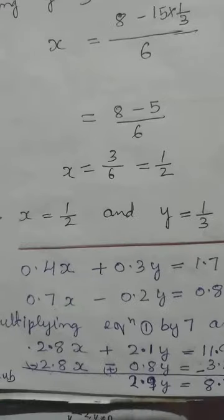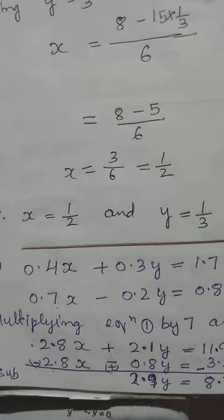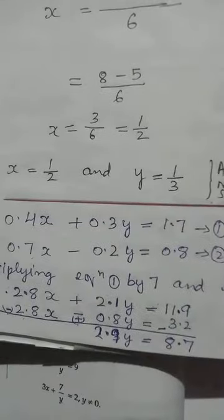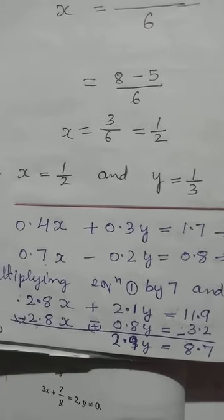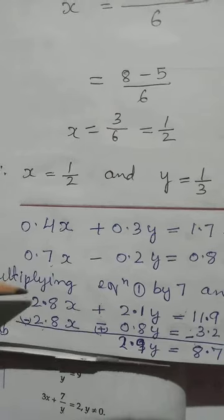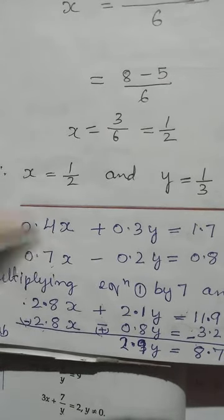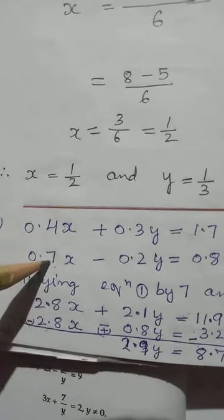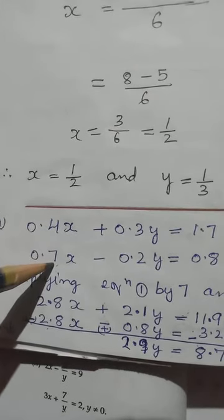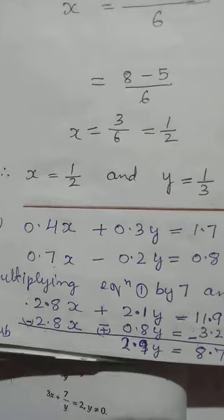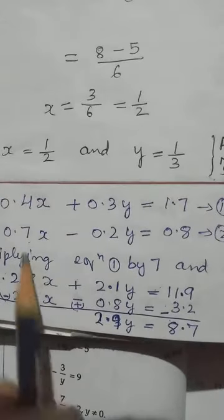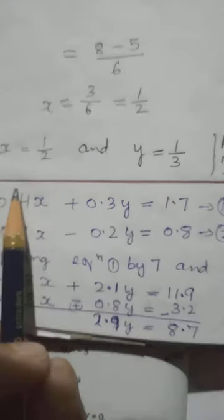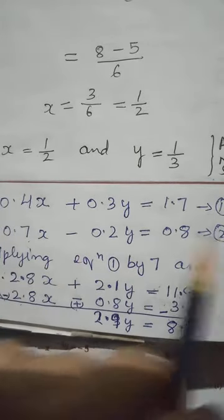We will try to make the coefficient of X or Y equal. Either you make the coefficient of X equal or the coefficient of Y equal. We have to multiply by such a number so that they will be equal. I want to make the coefficient of X equal here. We have decimals, so let us multiply by a number. Here we have 4 and here we have 7. Since 4 into something won't give 7 and vice versa, we just cross multiply. Coefficient of X from equation 2 — we multiply equation 1. Then coefficient of X from equation 1 — we multiply equation 2.